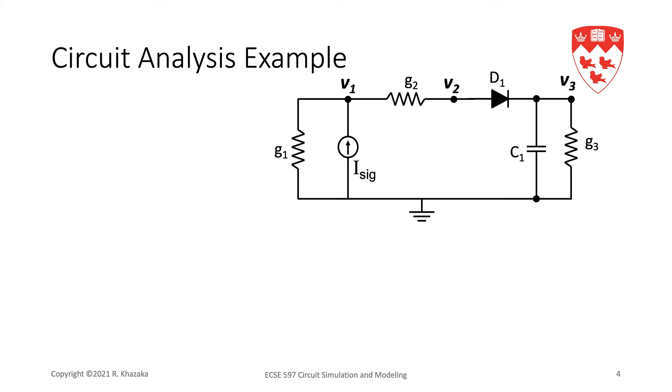As we will often do in this course, we're going to start with an example. Let's take a look at this simple circuit. We're going to do nodal analysis the same way you would in your first year circuits course. We're going to take the three nodes of the circuit, node 1, node 2, and node 3, and apply Kirchhoff's current law at every node.